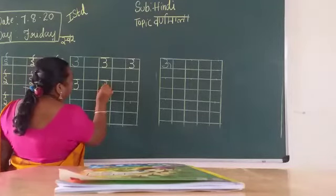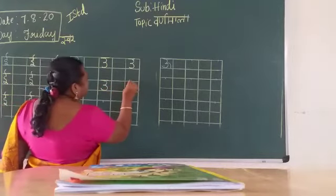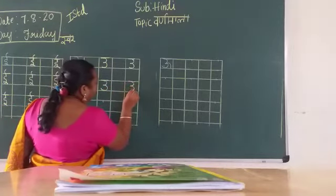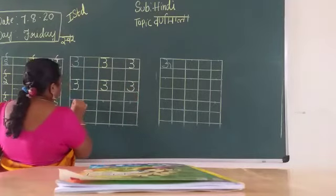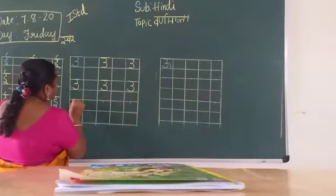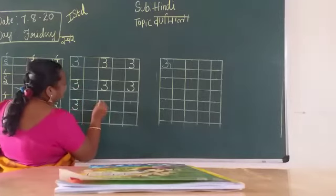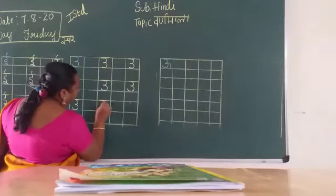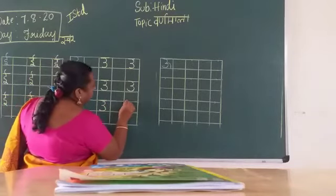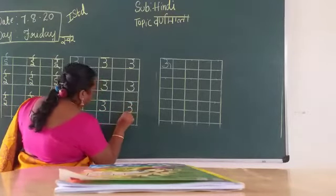Sleeping line, half curve, again half curve. Sleeping line, half curve, again half curve. Okay. Sleeping line, half curve, again half curve. Sleeping line, half curve, again half curve. What is this? O. O. See what is each other means letter? O.